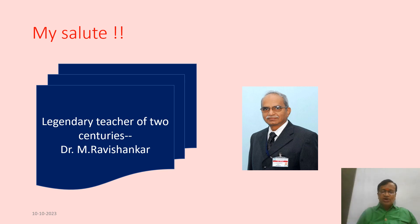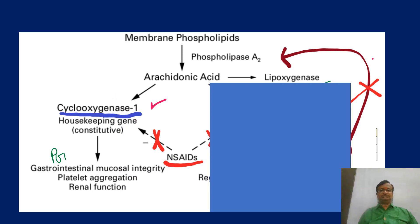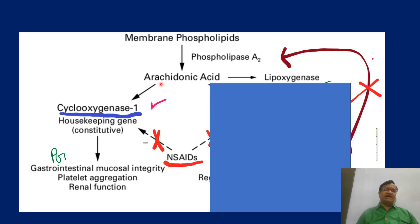Whenever I talk about anything in academics, I pay tribute to the legendary teachers of the centuries. Now, this is the foundation of acute pain relief. Membrane phospholipids are converted into arachidonic acid by phospholipase A2, and this arachidonic acid is converted via cyclooxygenase and lipoxygenase pathways. COX stands for cyclooxygenase.